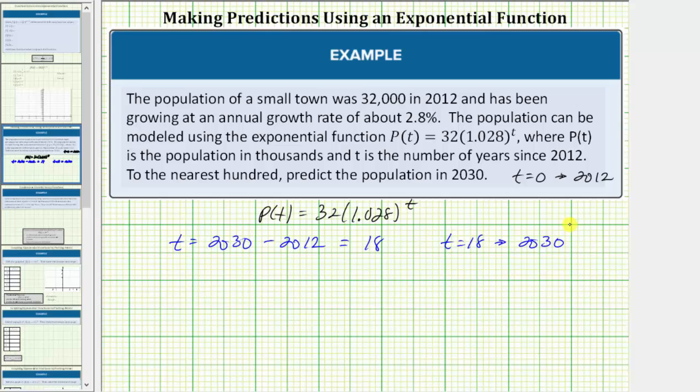Which means to make the prediction, we need to determine the function value p(18). So p(18) = 32(1.028)^18. To approximate this function value, we need to use the calculator.